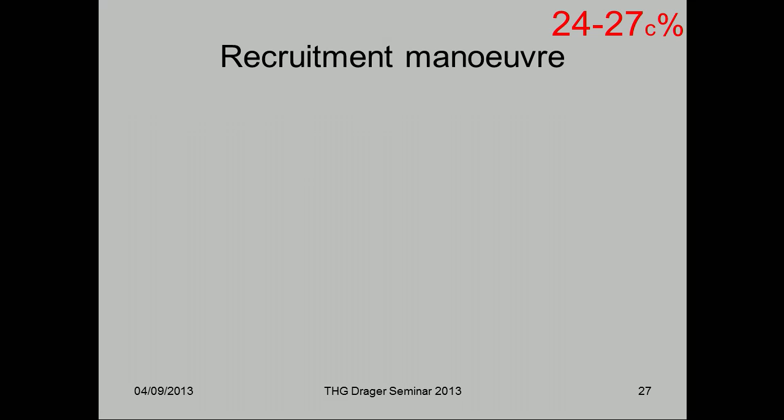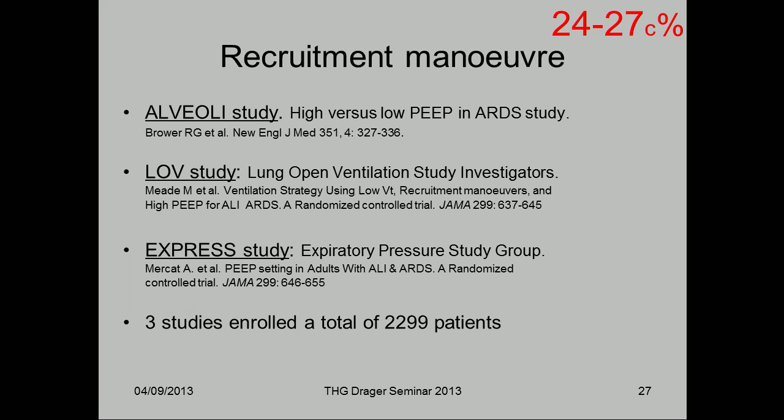Two other very similar studies — the LOVE study from Canada with LEED, and the EXPRESS study with Mercat — both have similar designs focused on a recruitment maneuver followed by a PEEP strategy. However, in none of these three studies was the treatment group better than the control group. The range of outcomes in the control groups was 24% at best in the Alveoli study and about 27% in the other two. So recruitment maneuvers followed by high PEEP settings may not be the way to go based on the current evidence, and we must focus on outcome data.